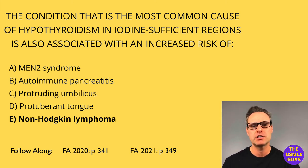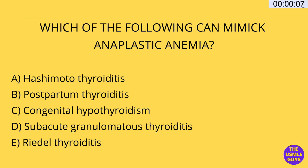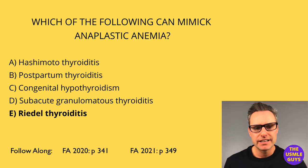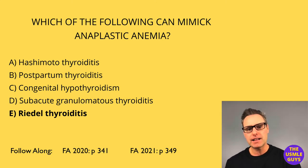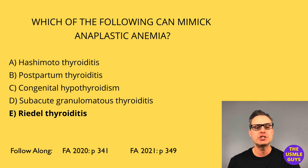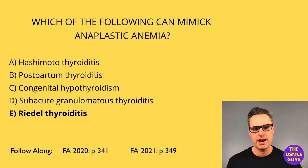Let's move on to our next question — go ahead and pause, and when you think you have the right answer, come on back. The answer here is E. Riedel thyroiditis can mimic anaplastic carcinoma due to the fact that the thyroid is replaced by fibrous tissue and inflammatory infiltrates, leading to fibrosis extending to local structures. This condition is a manifestation of IgG4-related systemic diseases like autoimmune pancreatitis and non-infectious aortitis.